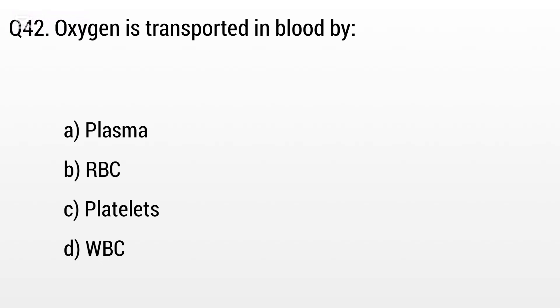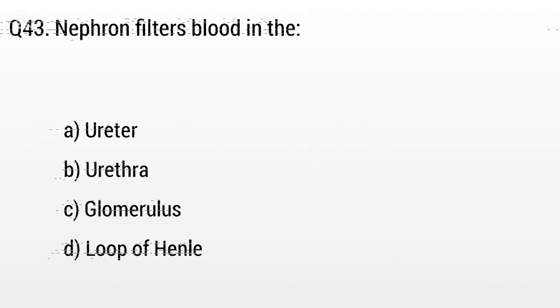Question 42. Oxygen is transported in blood by: Option A: Plasma, B: RBC, C: Platelets, D: WBC. The right answer is option B, RBC.